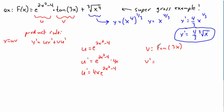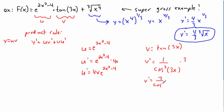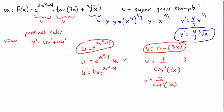Let v equal tangent of 3x. The derivative of tangent of some junk is 1 over cosine squared of that junk. So the derivative of the outside is 1 over cosine squared of 3x, evaluated with the original inside 3x. Then multiply by the derivative of the inside, which is 3. So v prime equals 3 over cosine squared of 3x.